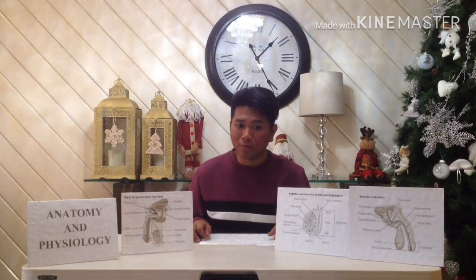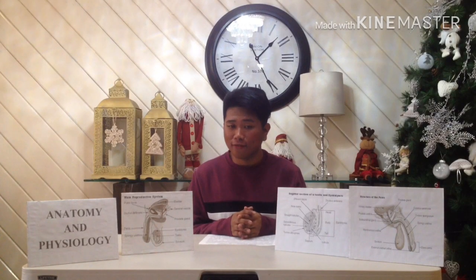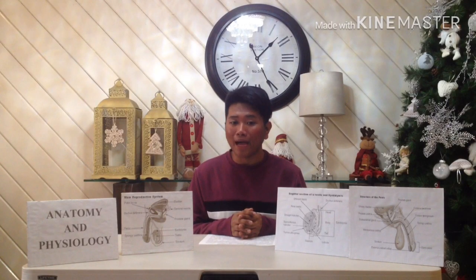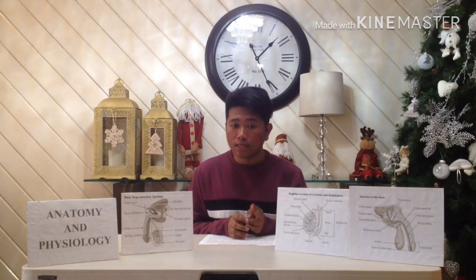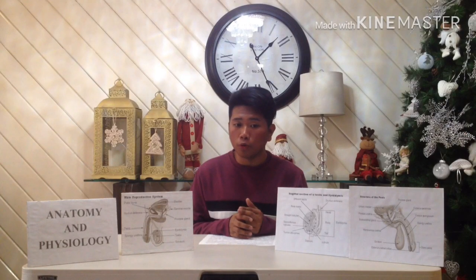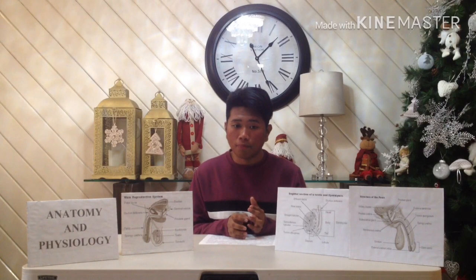Sperm are produced by spermatogenesis within the seminiferous tubules. A transverse section of a seminiferous tubule shows that it is packed with cells in various stages of development. Interspersed with these cells are large cells that extend from the periphery of the tubule to the lumen. These large cells are the supporting or sustentacular cells, which support and nourish the other cells.